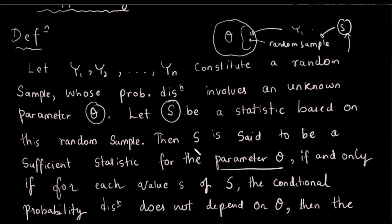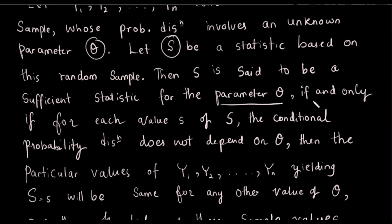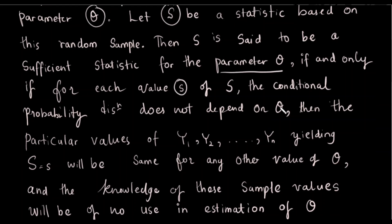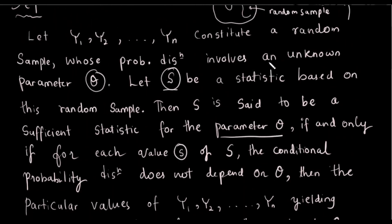A statistic is a sufficient statistic if and only if, for each value of s, the conditional probability distribution does not depend on theta.